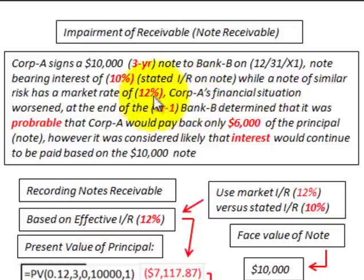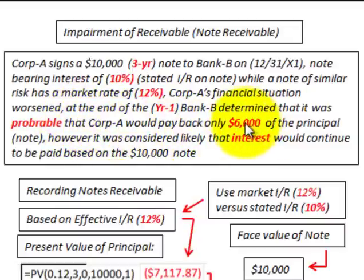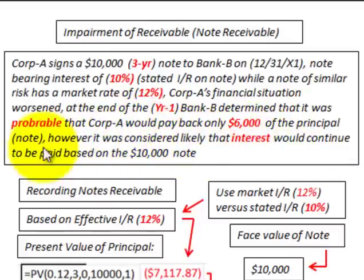Corporation A's financial situation worsened. At the end of year one, Bank B determined that it was probable that Corporation A would pay back only $6,000 of the $10,000 principal amount owed. However, it was considered likely that interest would continue to be paid on this $10,000 note — they would be paying the 10% interest on the full $10,000 note.